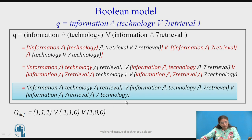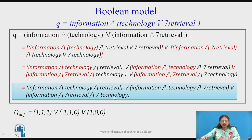Once we have identified the DNF, we convert it into the weight vector. Wherever the term is present without negation, the weight will be 1, and if it is present with negation, the weight will be 0. That is how we get weights such as 1 1 1 1 1 0 and then 1 0 0.